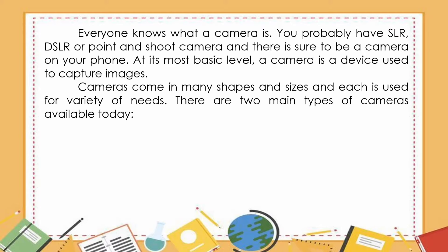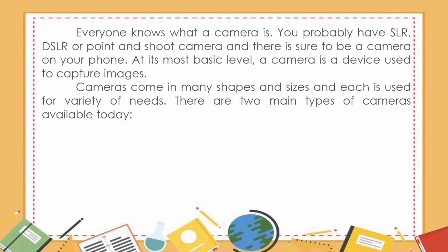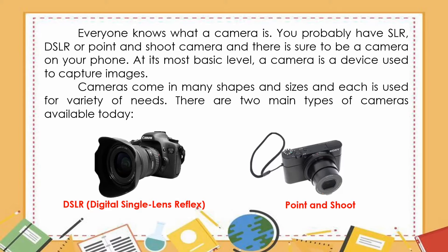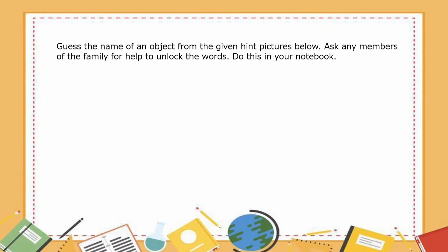So everyone knows what a camera is — you probably have an SLR, DSLR, or point and shoot camera, and there is sure to be a camera on your phone. At its most basic level, a camera is a device used to capture images. Cameras come in many shapes and sizes and are used for a variety of needs. There are two main types: the DSLR or digital single lens reflex, used by professional photographers, and the point and shoot, which anyone can use.